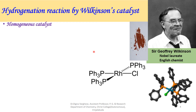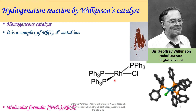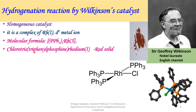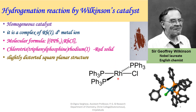Here you can see the Wilkinson Catalyst. It is a complex of rhodium(I) metal ion and is a D8 electron species. Its molecular formula is (PPh3)3RhCl. Its IUPAC name is tris(triphenylphosphine)rhodium(I) chloride. It is a red solid and has a slightly distorted square planar structure. It is a 16-electron complex.